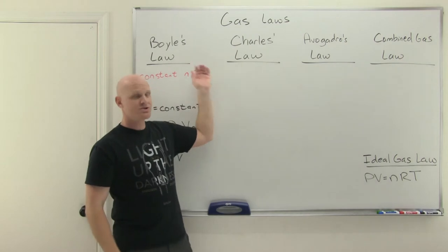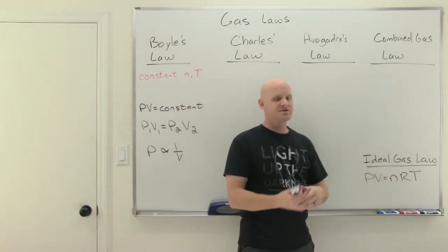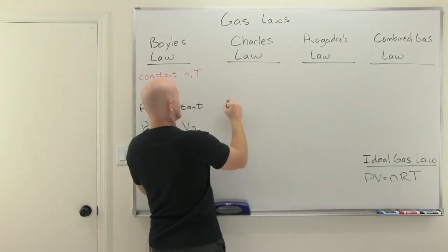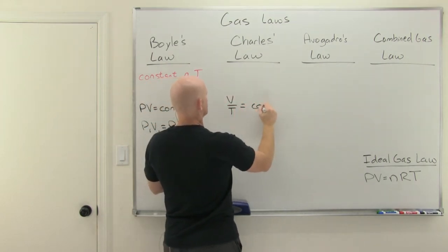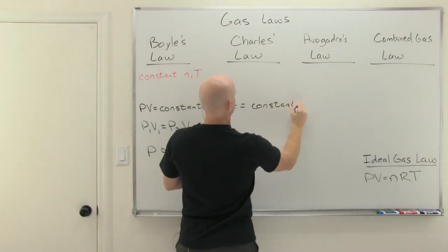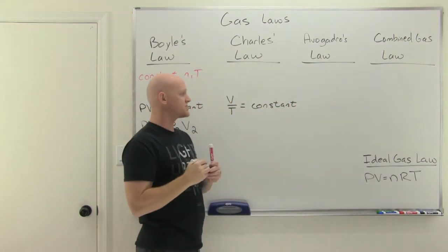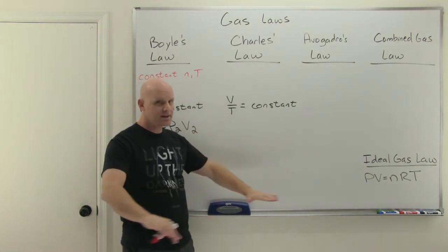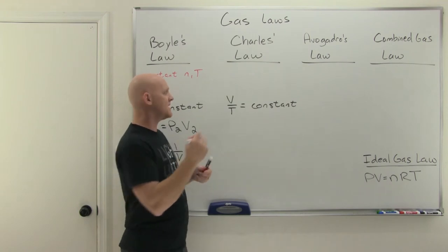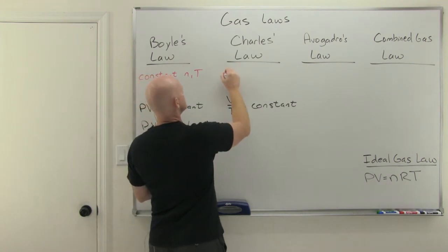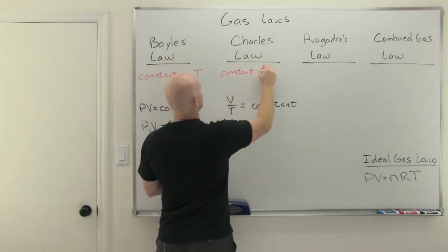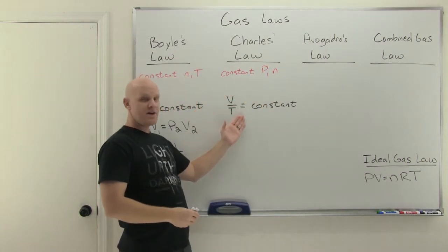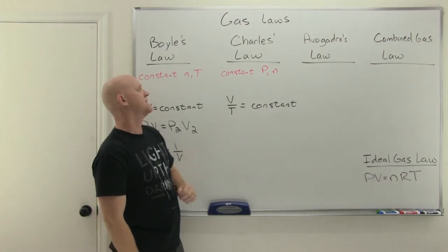Next on the list is Mr. Charles. Mr. Charles compared volume to temperature. What he said is that volume over temperature equals a constant — that's one way to express Charles' law. But again, if you're comparing volume to temperature and just want to see how volume varies with temperature only, you've got to hold the other variables constant. This is only true as long as you have constant pressure and a constant number of moles of gas.